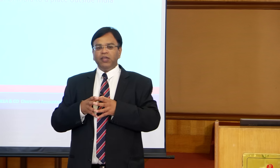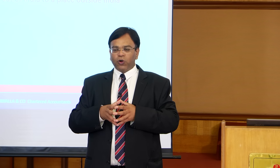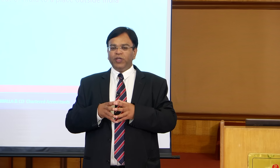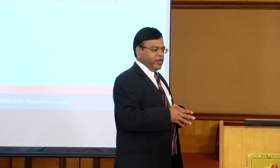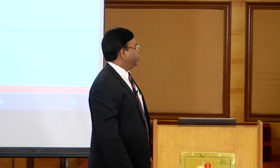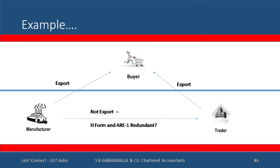Similarly in excise today, the customer gives a CT3 and Area 1 bonding is done with proof of exports for re-bonding, so no excise duty is paid even when supplying to a merchant exporter. All those concepts go away under GST. A manufacturer supplying directly to the buyer is an export; supplying to a trader is not. The H-form and the CT3 process become redundant. The trader who exports gets zero rating, but you must first pay duty to the manufacturer and then claim a refund.